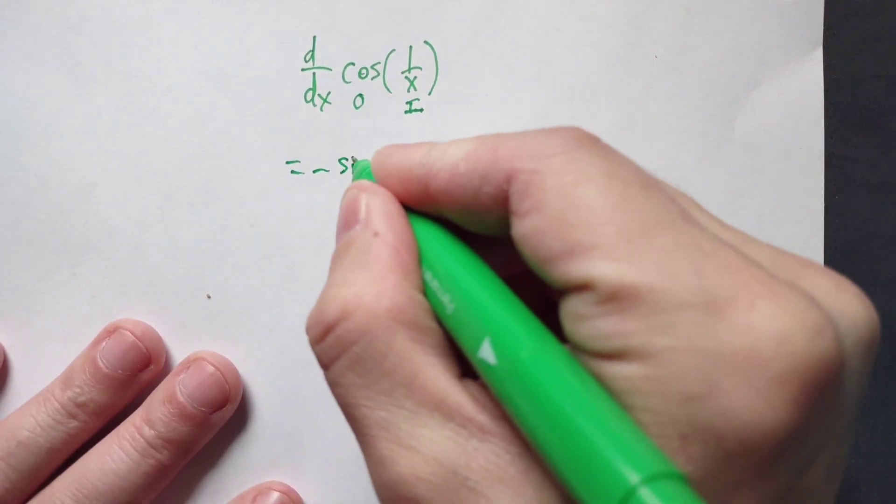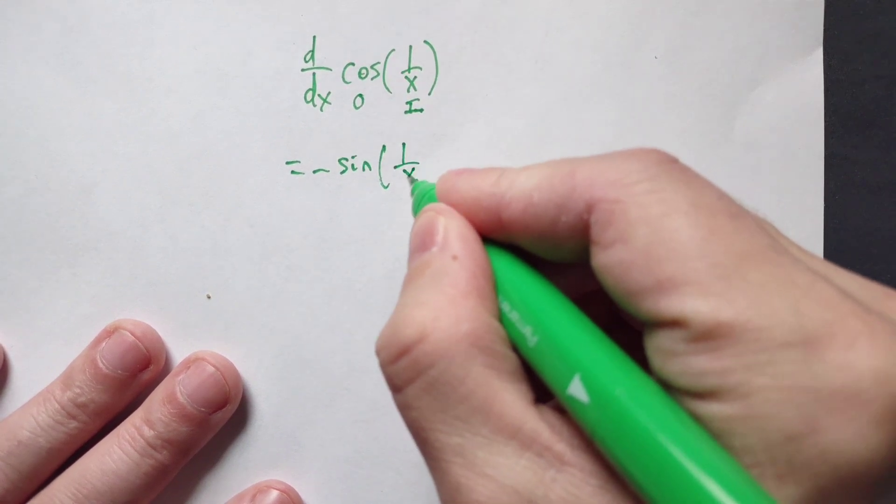So differentiate the cosine function, that's negative sine, then you copy the inside unchanged, so that's just 1 over x.